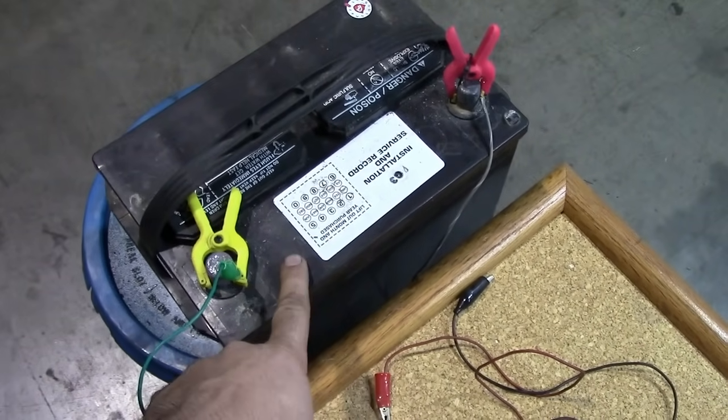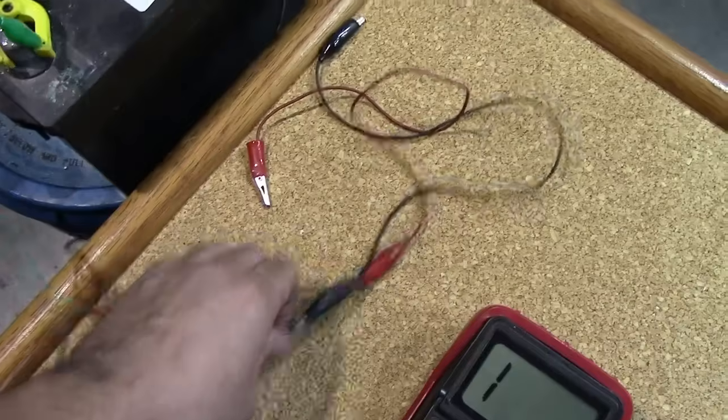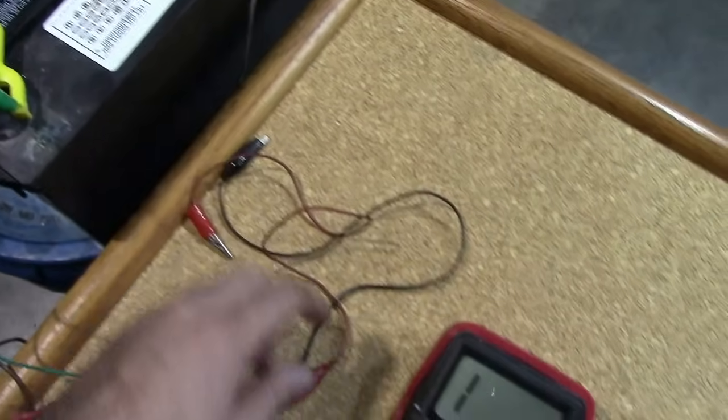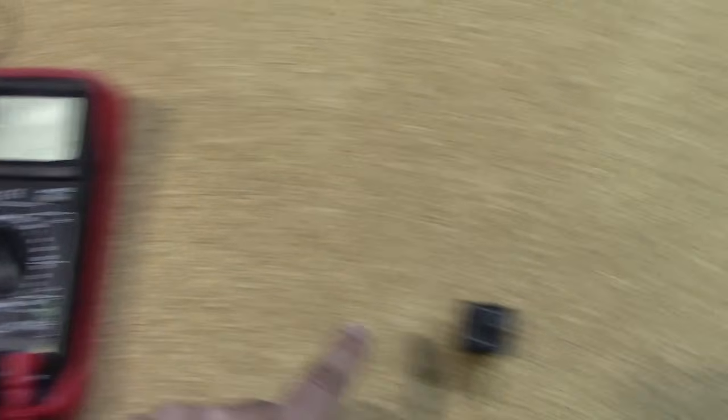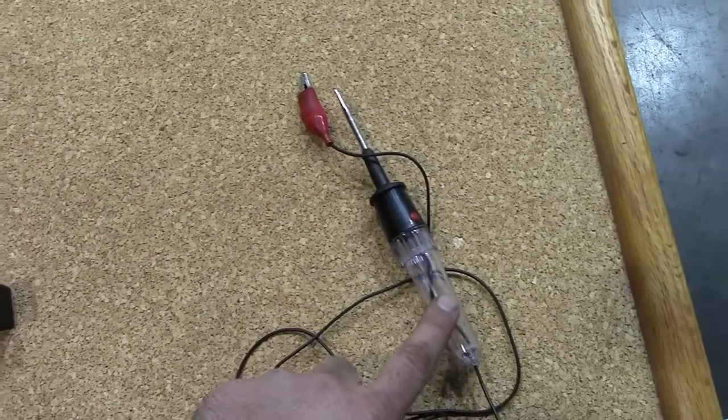The things you'll need to do this test are a 12-volt battery source, some alligator clips to make life easier, a multimeter, and also a test light to use as a current draw on your relay when you go to test it.